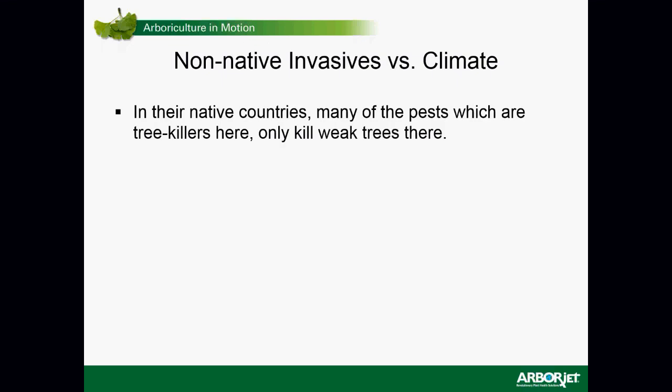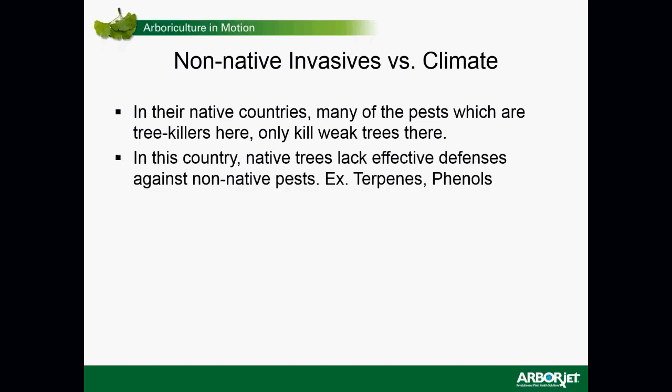Let's talk about non-natives versus the climate. In their native countries, many of these pests, which are tree killers here, only kill the weak trees over there. In this country, the native trees lack the effective defenses against those non-native pests. There are specific chemicals typically found in the phloem of the tree — the outermost portion that allows movement down the tree of carbohydrates and water. Terpenes and phenols are some of those chemicals used in trees to defend against insects, but they literally have different terpenes, phenols, and defense mechanisms from one place to another. We don't have those in the United States for pests that evolved 6,000 miles away.